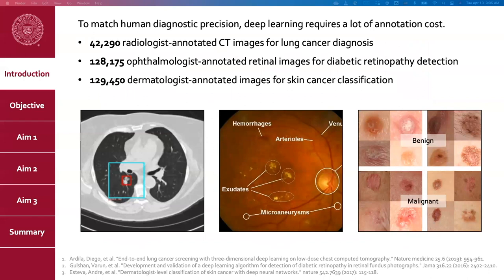I give three successful examples here — using deep learning methods to deal with lung cancer, diabetic disease, and skin cancer. These studies demonstrate that deep learning can achieve human-level diagnosis precision. However, developing such deep learning models requires a huge amount of annotation cost, and these annotations are largely done by human experts.